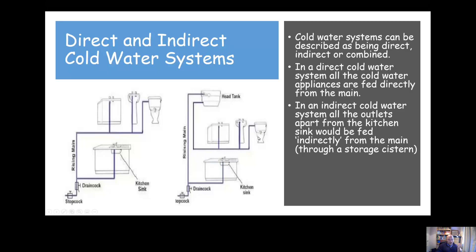In an indirect system, we'd have our supply pipe coming up to fill the storage system, and then the pipework from the system feeding cold water outlets would be described as the cold water distribution pipe. There are a lot of key differences between the direct and indirect cold water systems, which we're going to cover over the rest of this section.